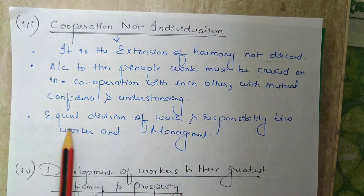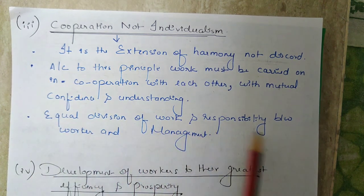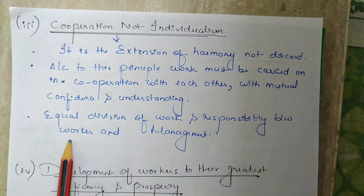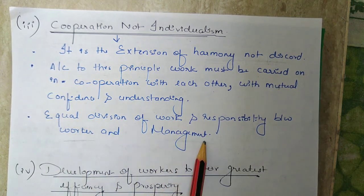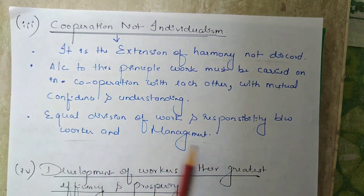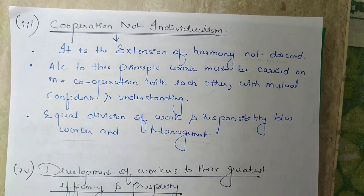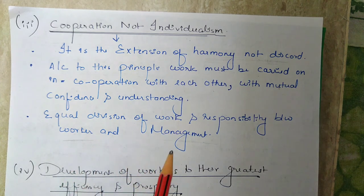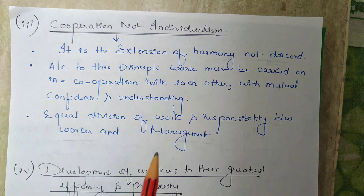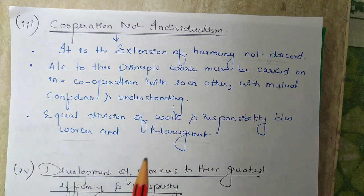There should be equal division of work and responsibility between workers and management, and management should work side by side to encourage and help employees. For example, while assigning a job to workers, if management asks them about their interest and work is assigned according to that interest, the workers will definitely perform it more efficiently.